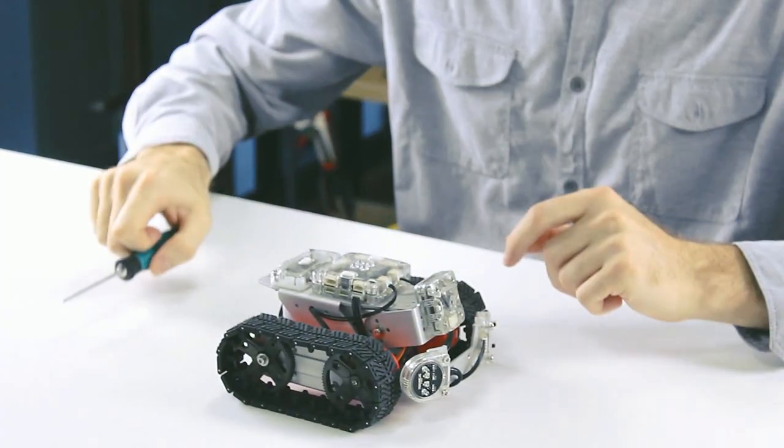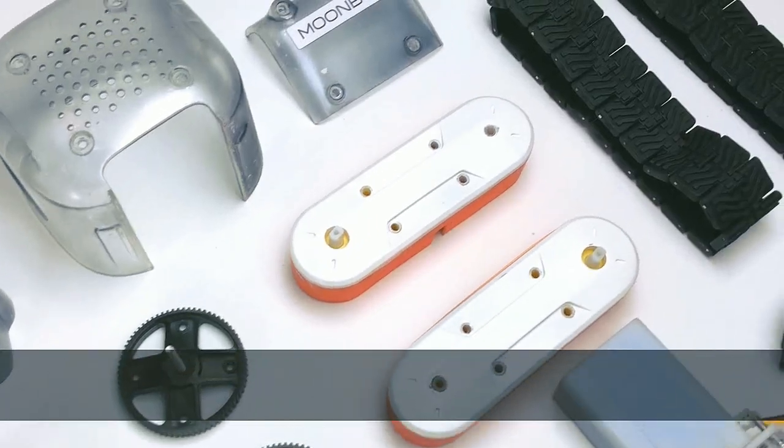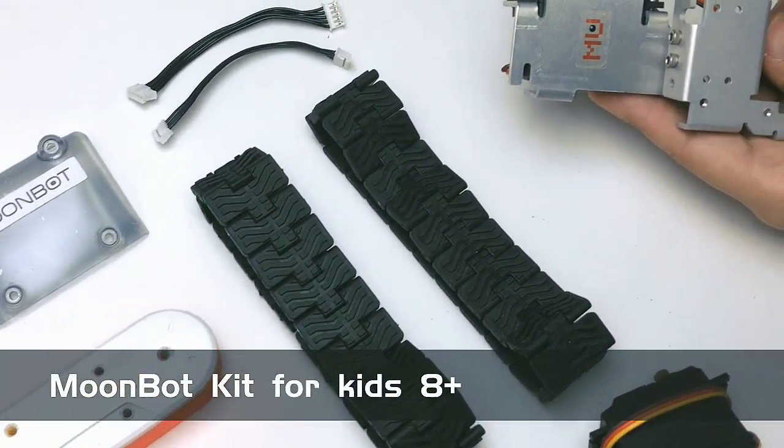Unlike other robot kits, Moonbot uses cutting-edge computer vision as its primary sensor. By building, modifying, or even hacking the Moonbot, everyone can learn how to use AI technology.